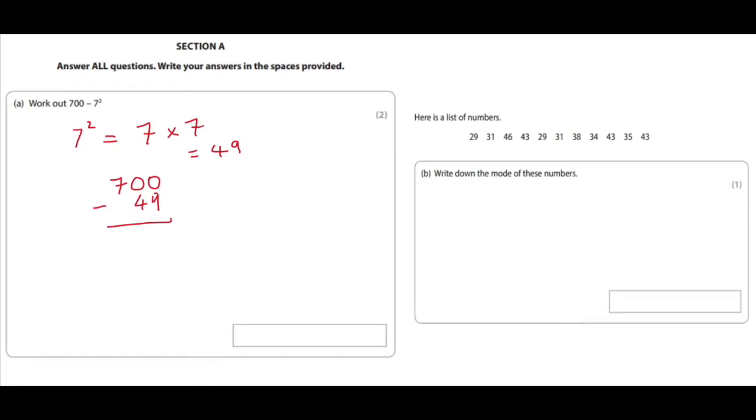You can't take nine away from zero so you move to the next column, but that's a zero as well. So you have to move to the 7.